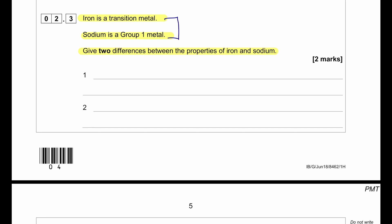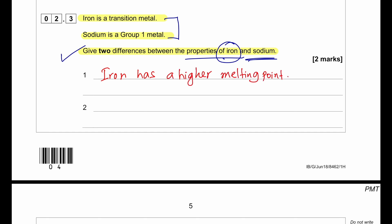When comparing a transition metal and a group 1 metal, iron has a higher melting point, higher boiling point, is more dense, and is harder than sodium. These are physical property differences. You can also talk about chemical properties for additional points — for example, transition metals can form variable oxidation states and are less reactive with water compared to group 1 metals.